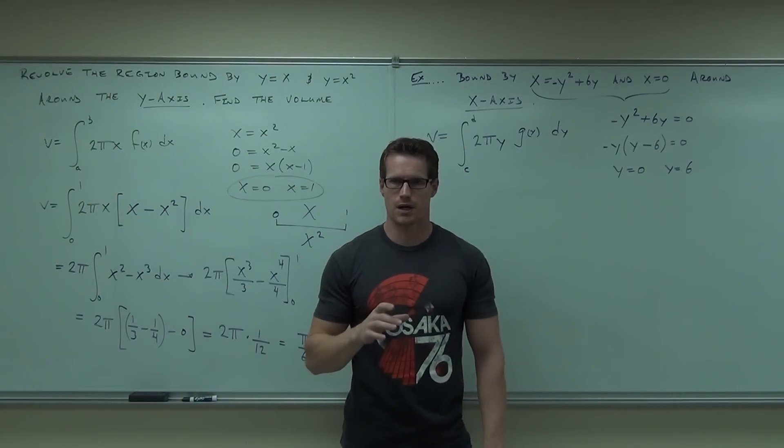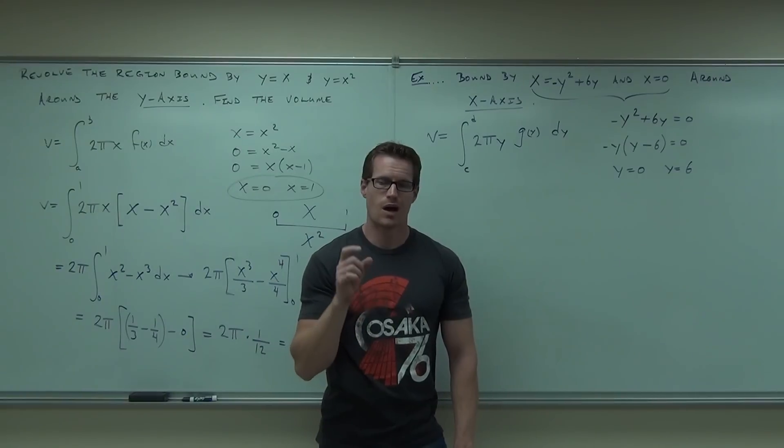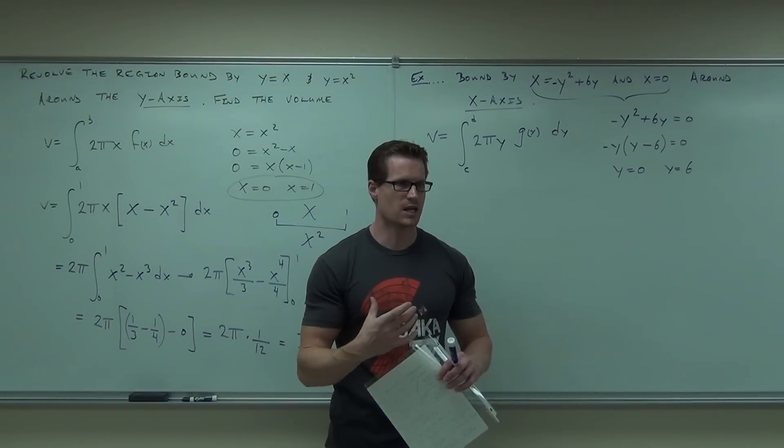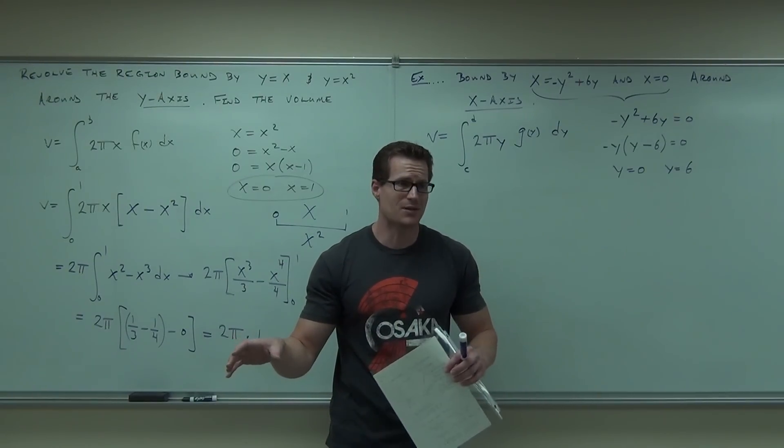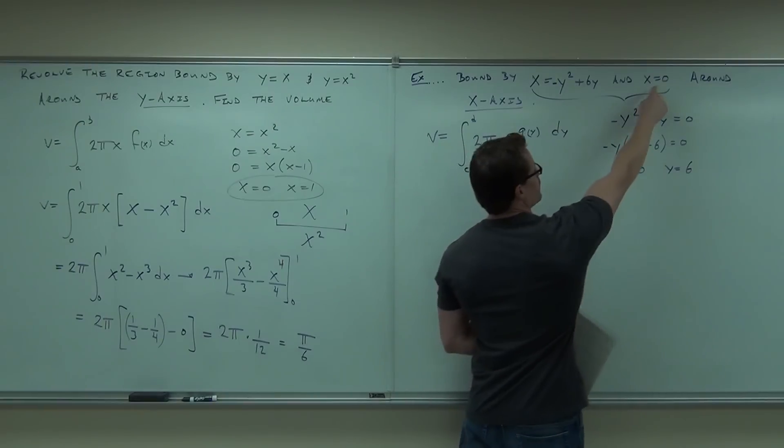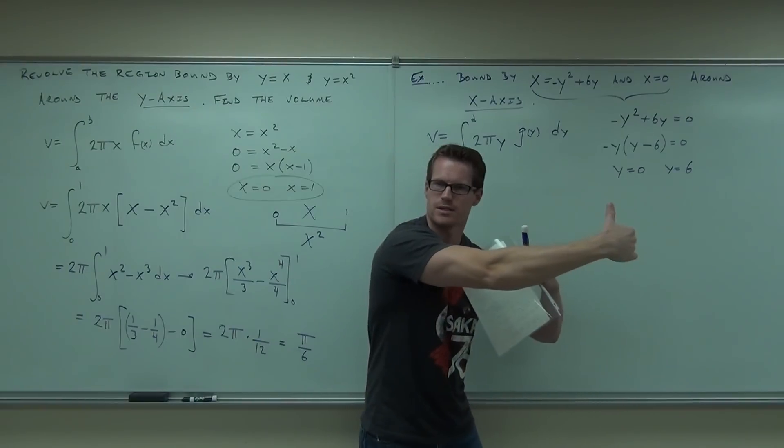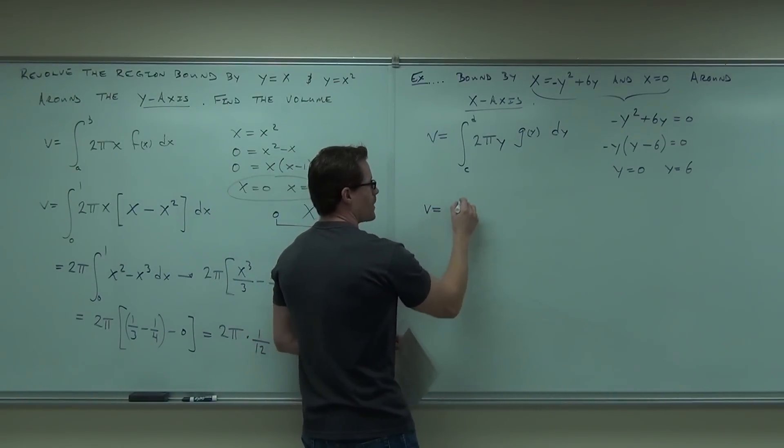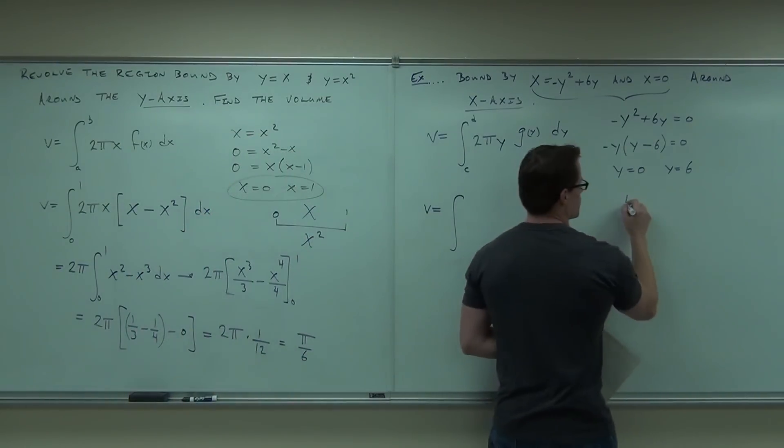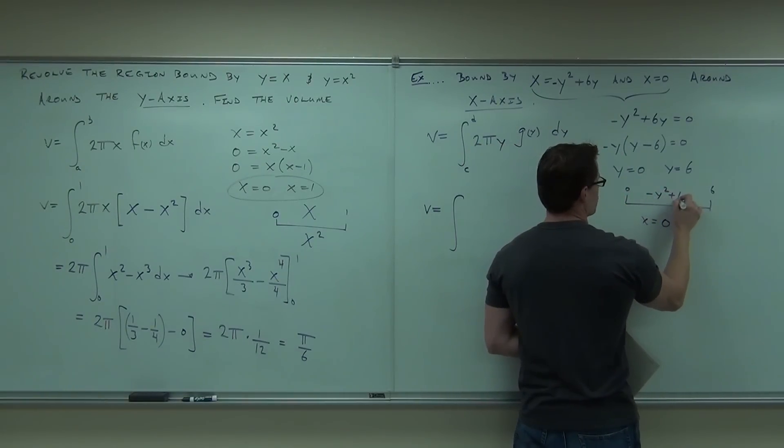By rights, you should determine which function is on the top. The y equals zero or the x equals negative y squared plus 6y. Plug a number in there just to make sure because if you did it backwards, you're going to get a negative volume. Can you ever have a negative volume? Some of you on your homework are giving me negative volumes. You can't get a negative volume. So I'm going to take like a one. Just plug in one. If you plug in one here, you still get zero. If you plug in one here, you're going to get five. So that means that this function is on the right or on the top. For y functions, we get on the right.